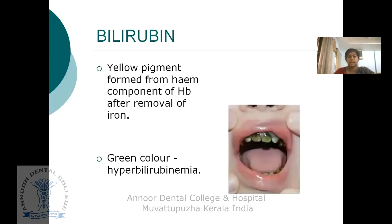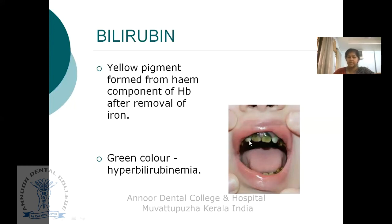The next endogenous pigmentation is bilirubin. Bilirubin pigmentation is due to the pigment from the heme component after the removal of iron. It appears as a green color, usually seen on the teeth due to hyperbilirubinemia.